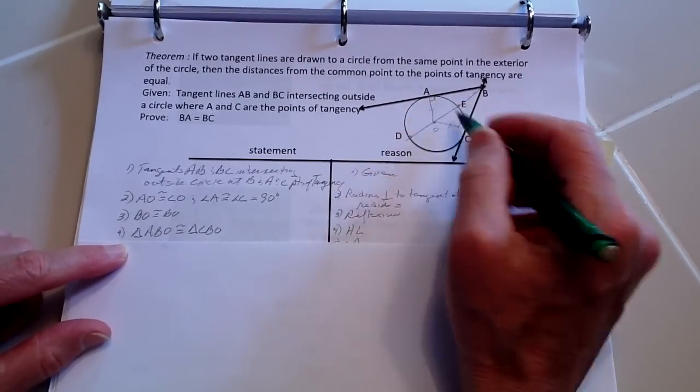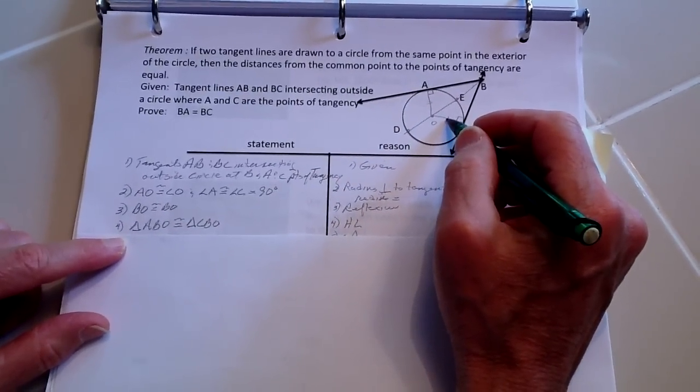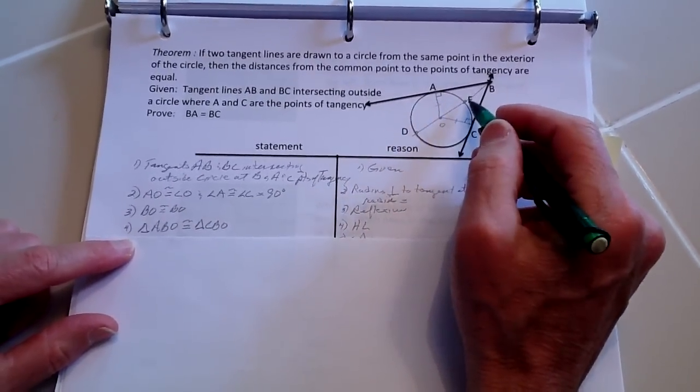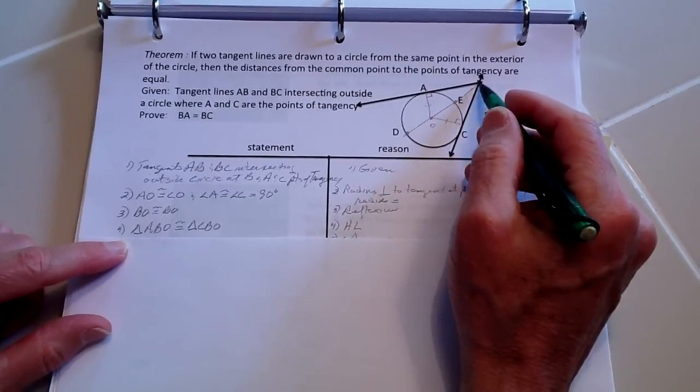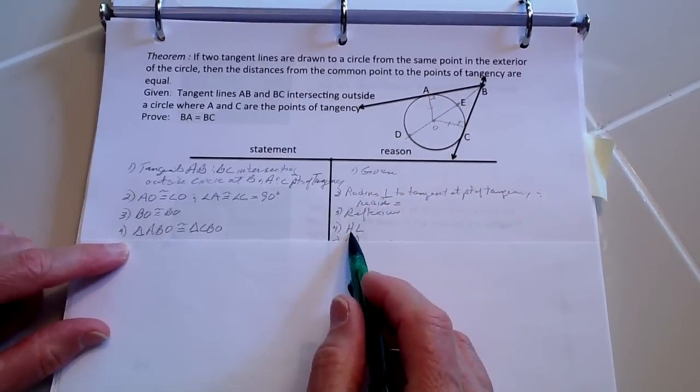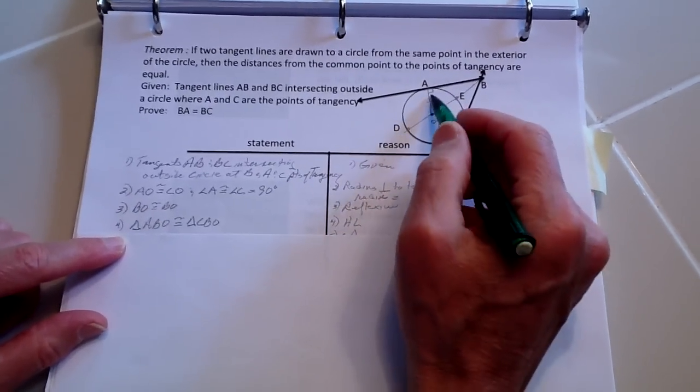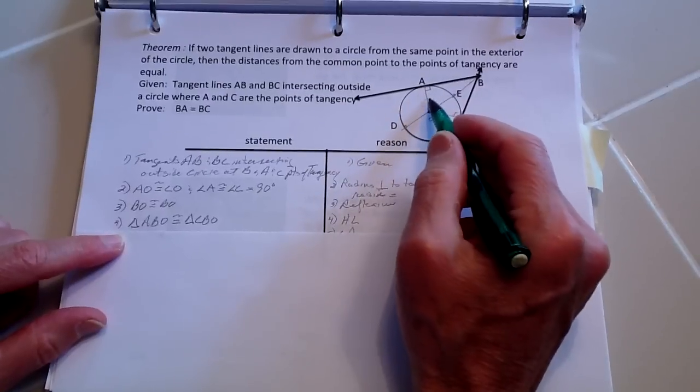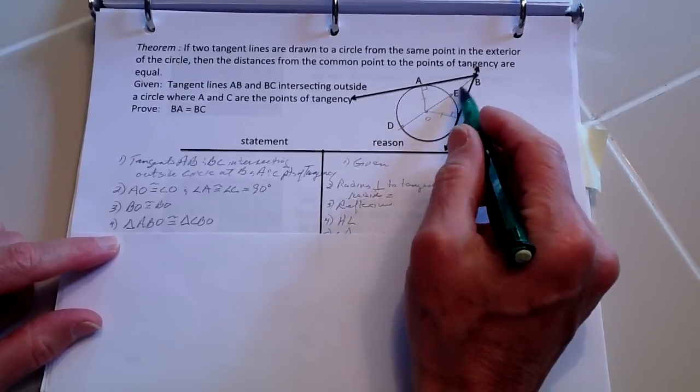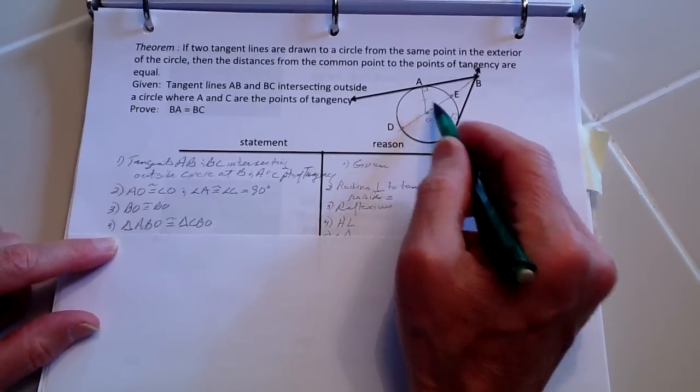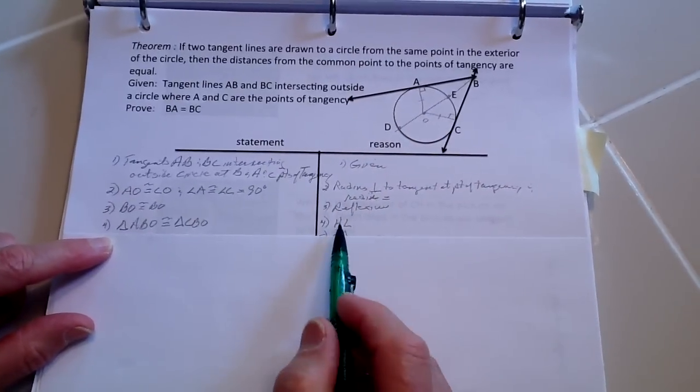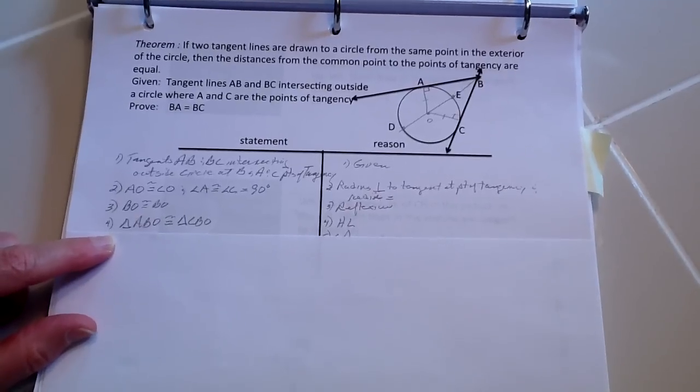Because these are right angles, and we have a side, and then we have the hypotenuse here—we have the hypotenuse and the right angle and the leg. Hypotenuse-leg shows the congruence.